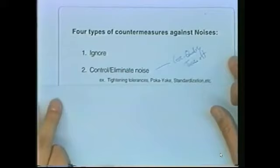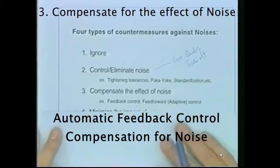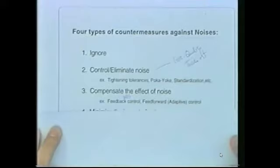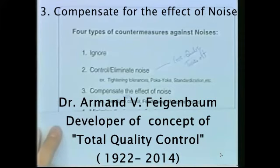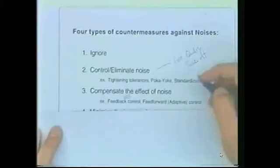Another type of countermeasure — one engineers love — is compensation, either before the fact or after the fact. Feedback control means you compensate after the fact. A good example is ABS, the anti-lock braking system — it's a feedback control subsystem. Adding ABS increases cost, but the brake itself is not robust against ice, so they have to add it. Sometimes you have to do this, but again, this kind of countermeasure is a cost-quality trade-off.